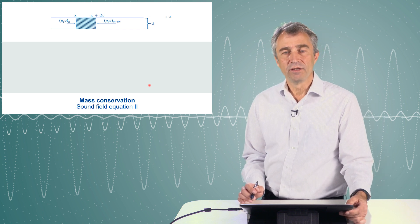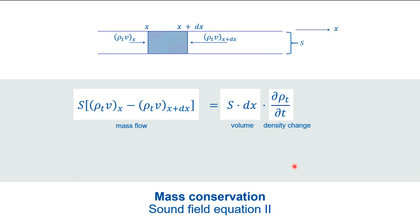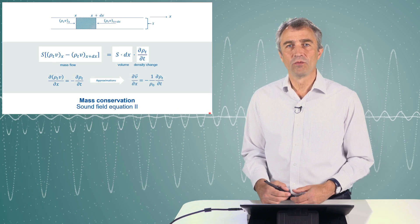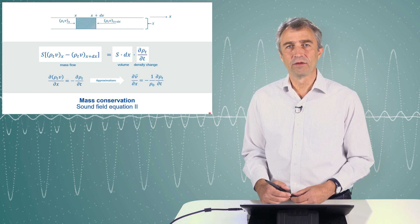In equations this reads as the surface again, which means the cross section, times the difference of mass flow equals to the volume and a change of density. We can write this in a compact form again in a differential equation and again with approximations we can simplify this. One problem of the second equation however is that we have a third variable, which is the density. Remember that in the first equation there was a relationship between the particle velocity and the pressure.